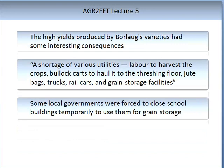The high yields produced by Borlaug's varieties had some interesting consequences. These included a shortage of various utilities required to take the grain to market. They ranged from labour to harvest, through to the supply of carts to haul, the threshing of the flour, the bags that flour is stored in, trucks, rails, cars, and grain storage facilities — all were in shortage.